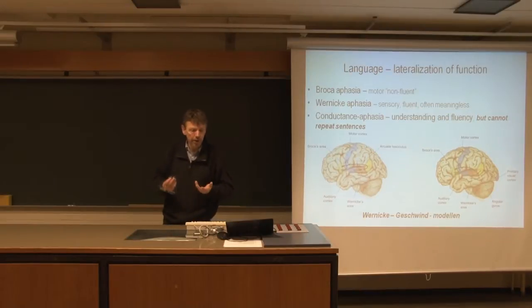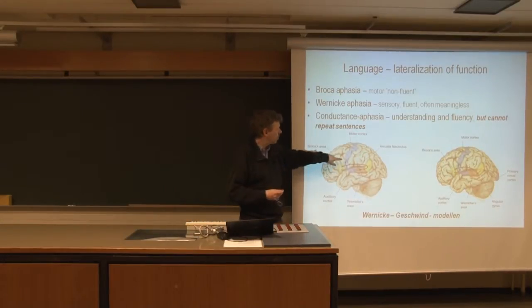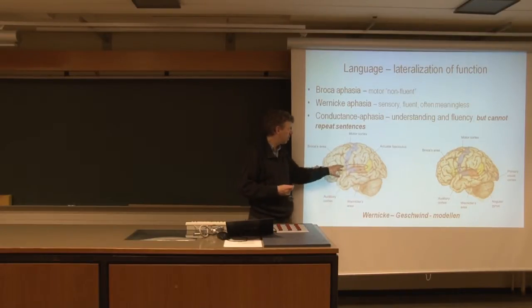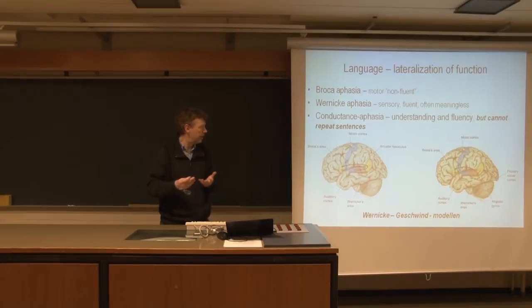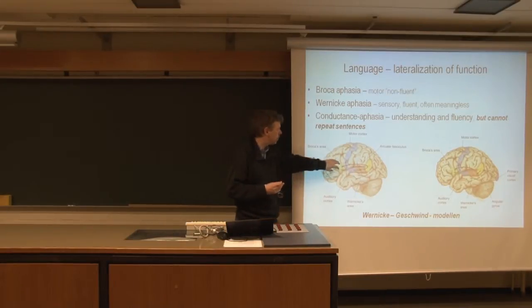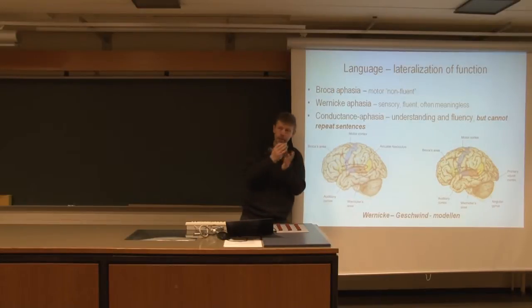It's a motor area, which is not the area which is directly involved in controlling the muscles. The control of the muscles is located in the primary motor cortex in this area. So the Broca area is kind of a higher motor area, which is in many ways part of the premotor cortex and which puts together the motor program.